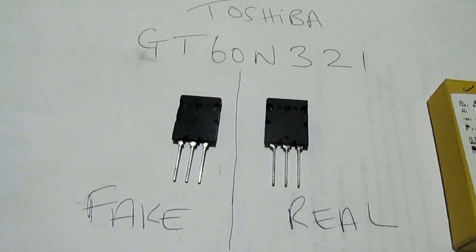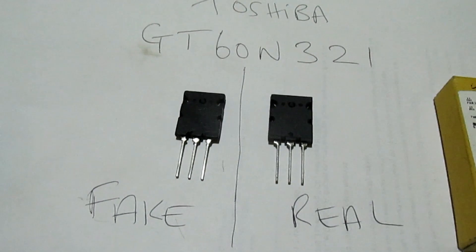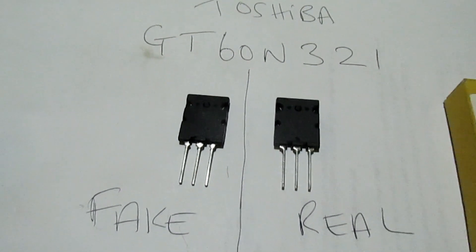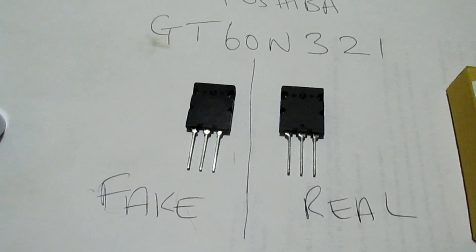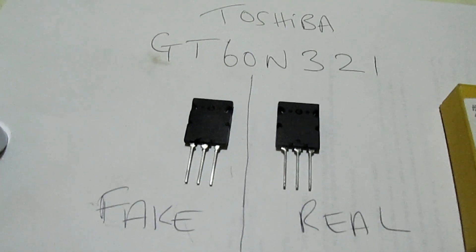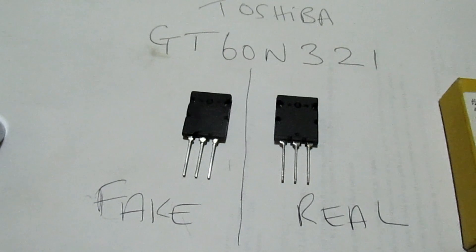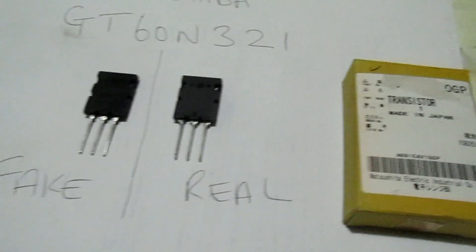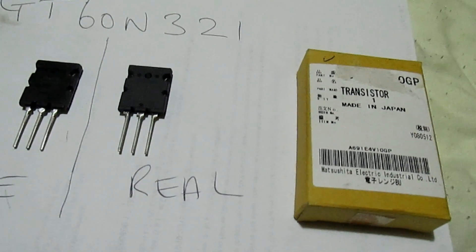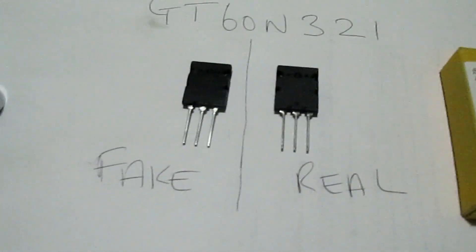Hi guys, another quick video here. I'm going to give you some more tips on how to spot a fake semiconductor. On the left-hand side you'll see a fake Toshiba GT60N321, on the right-hand side the real one. Obviously the real one comes in a Panasonic box because it's a genuine part. The fake one will just come loose.